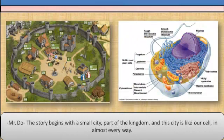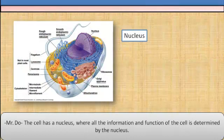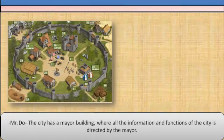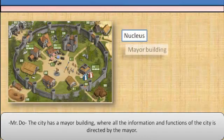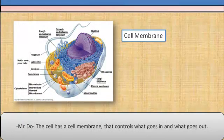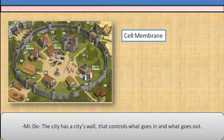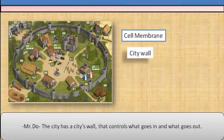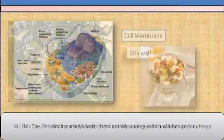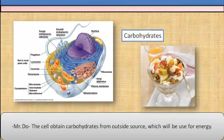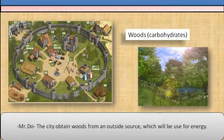The story begins with a small city, part of the kingdom. And this city is like our cell in almost every way. The cell has a nucleus, where all the information and function of the cell is determined. The city has a mayor building, where all the information and function of the city is directed by the mayor. The cell obtained carbohydrates from an outside source, which will be used for energy. The city obtained wood from an outside source, which will also be used for energy.